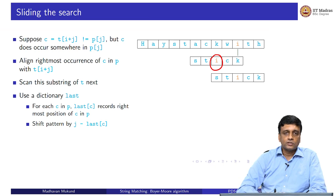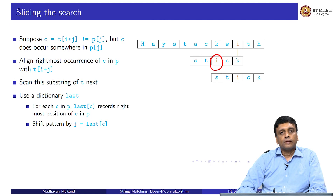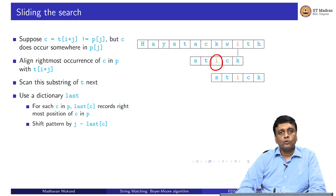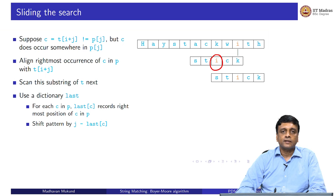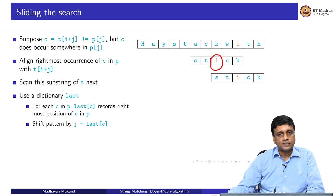We can pre-compute this — we are not going to look at our pattern each time. In the beginning we go through our pattern once and for every letter that appears in our pattern, we compute the last occurrence of that letter inside the pattern. We will use 'last' as a dictionary which takes a character and tells us the position of its last occurrence in the pattern. If the letter does not appear in our pattern at all, it will not be a key in the dictionary.